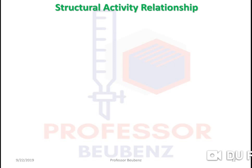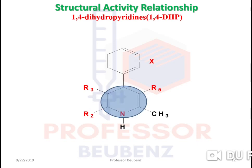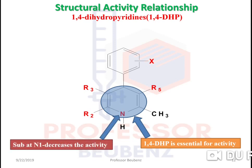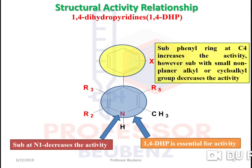Structural activity relationship of calcium channel blockers — most important for GPAT. The 1,4-dihydropyridine nucleus is essential for activity. If we replace this nucleus with any other ring or heterocyclic ring, we lose activity. Substitution at N1 also decreases activity. Substitution of a phenyl ring at C4 position increases activity; however, substitution with small planar or alkyl/cycloalkyl groups decreases the activity.